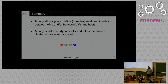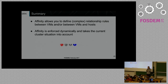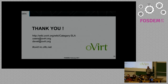In summary, affinity allows you to define complex relationships between virtual machines and between virtual machines and hosts. It's enforced dynamically, depending on the current cluster situation. When you define strong positive VM-to-VM affinity, we don't care if the VMs are running on host A or host B — they will run together on one of those hosts. That's it. Thank you.